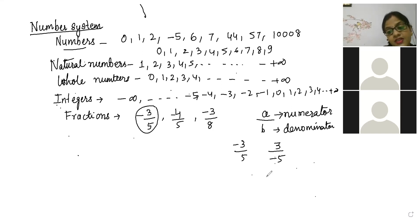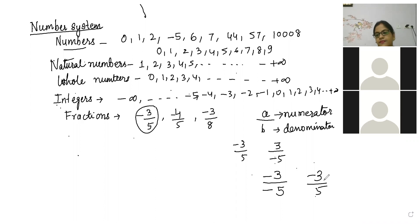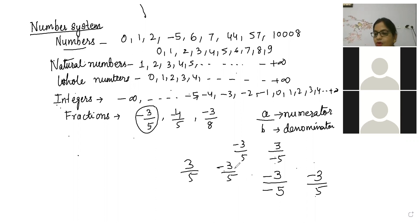But if someone will ask you about minus minus — there is a difference! 100% there is a difference because minus into minus will become plus. So it will become 3 by 5 and minus 3 by 5 — both are not the same. One is a positive fraction, one is a negative fraction.